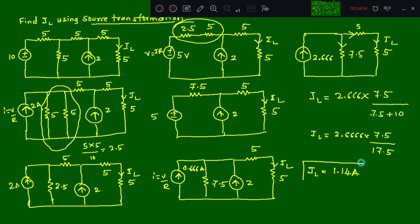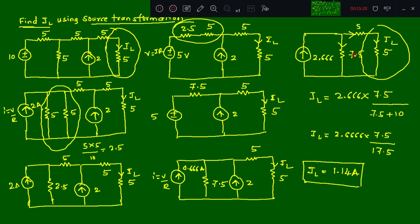This is the required answer for the given numerical using source transformation. Remember: whichever parameter they ask for, that part should not be touched till the end. At the end, you can use any method — here I used the branch current concept, but you could also use mesh analysis by assuming loop currents. The answer is IL = 1.14 amperes. The rest will continue in the next class. Thank you.